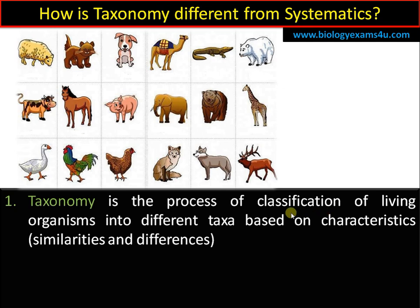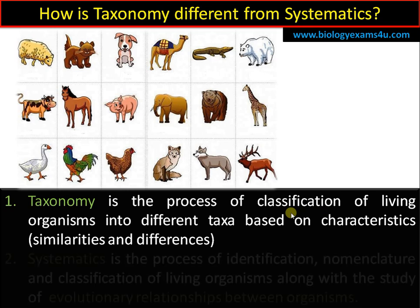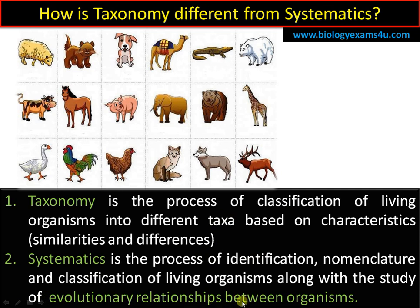How is taxonomy different from systematics? In taxonomy, the procedure is the process of classification of organisms into different groups based on characteristics. In systematics, the procedure is the same, but the evolutionary relationship — the phylogeny or evolutionary history of the organism — is also considered. According to systematics, all organisms share a common ancestor, so the relationship between all organisms is taken into account during identification, nomenclature, and classification. Systematics is the process of identification, nomenclature, and classification of living organisms along with the study of evolutionary relationships, or phylogeny.